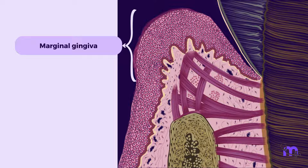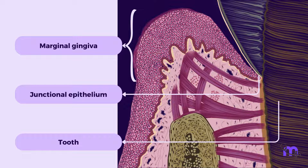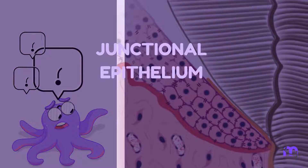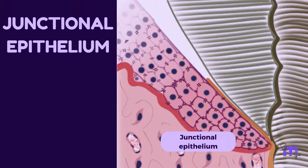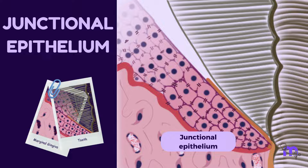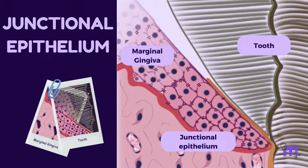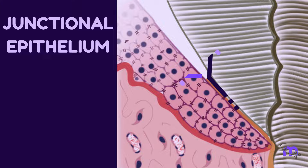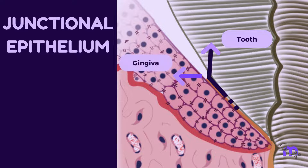The GENGIVAL EPITHELIUM attaches to the tooth surface via the junctional epithelium. What is the junctional epithelium and why is it important? The junctional epithelium is that part of the GENGIVAL EPITHELIUM that attaches the marginal GENGIVA to the tooth surface. It forms a junction between the tooth and the GENGIVA, hence it is called the junctional epithelium.